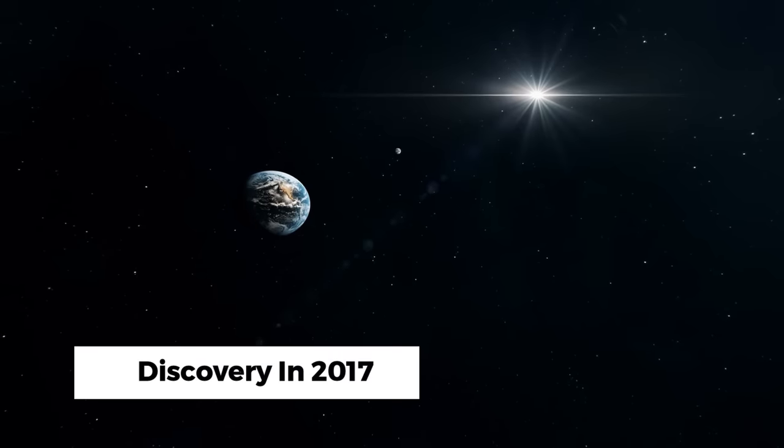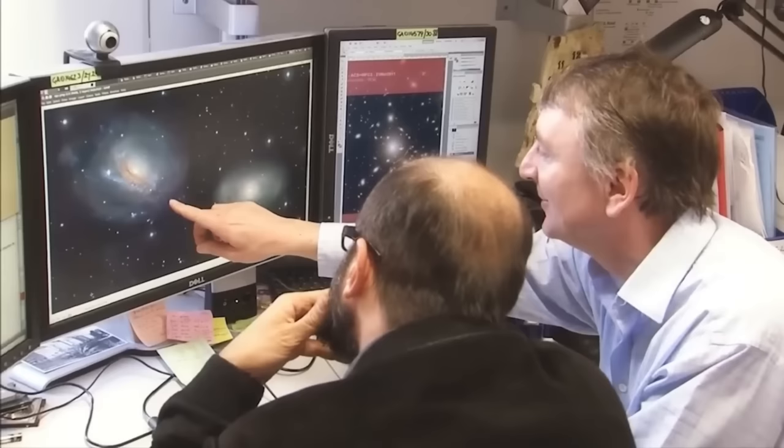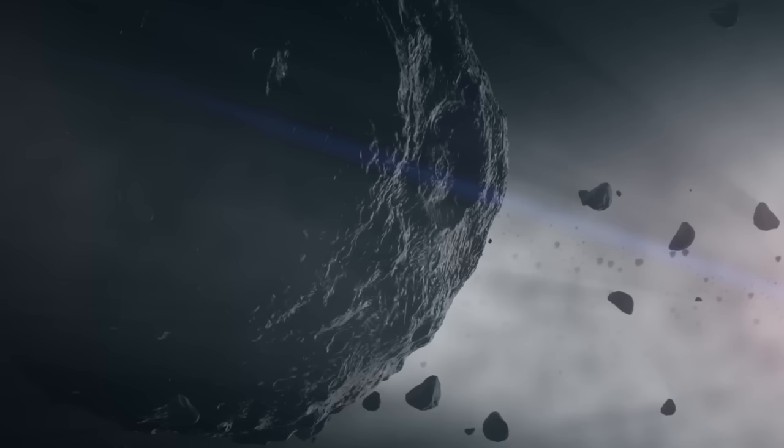Since its discovery in 2017, Oumuamua has been a subject of intrigue and speculation. This enigmatic object, the first known interstellar visitor to our solar system, has puzzled astronomers with its unique shape and erratic behavior.